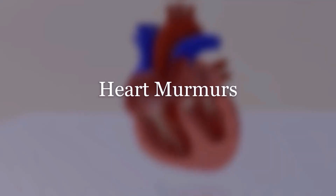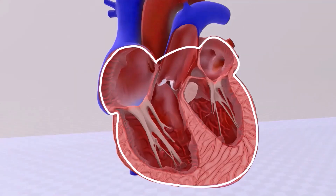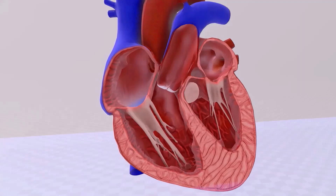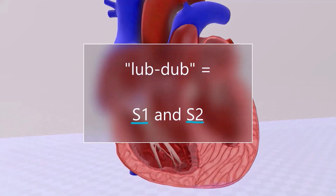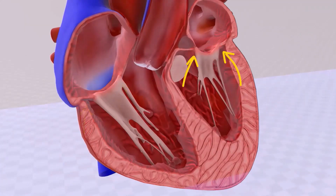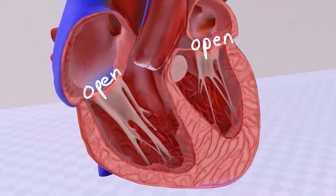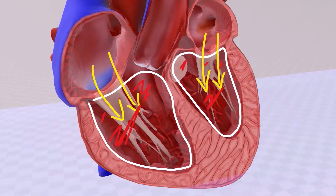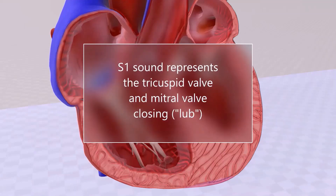Let's talk about heart murmurs and make it easy and fun. We have this heart — let's beat it and listen to the normal heart sounds, described as 'lub dub,' representing S1 and S2. S1 is produced by the closing of the tricuspid and mitral valves, which close after finishing filling the ventricles with blood.